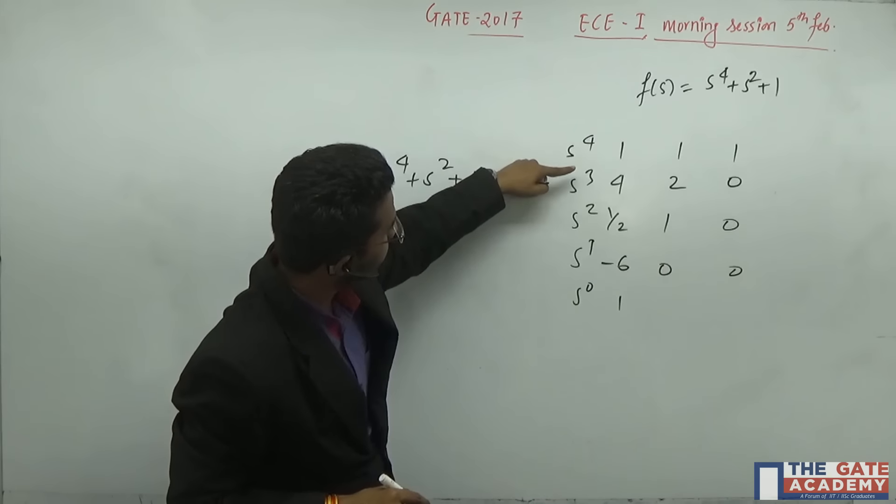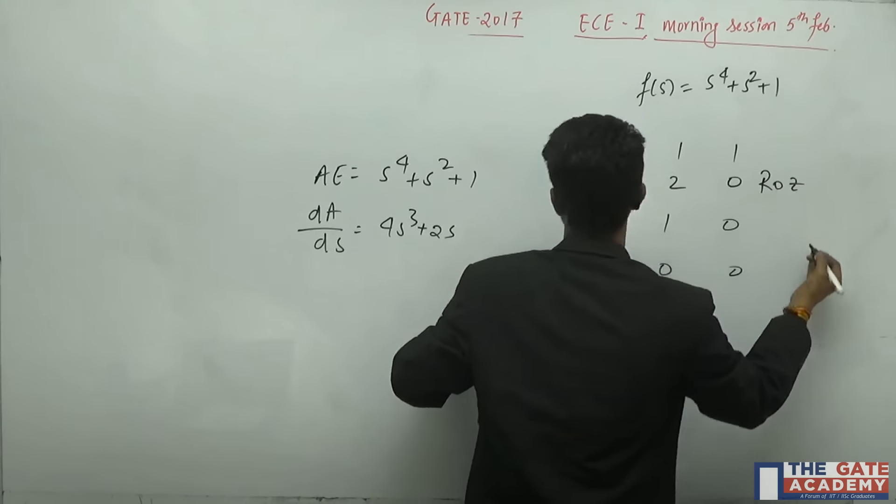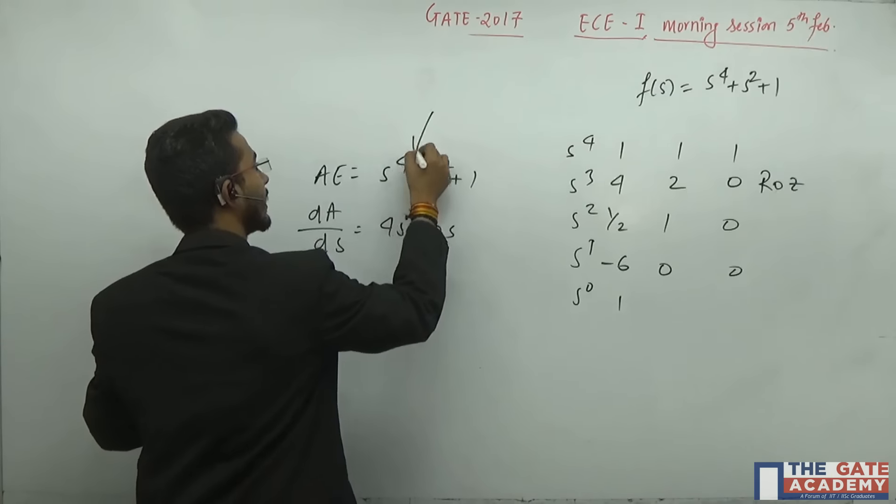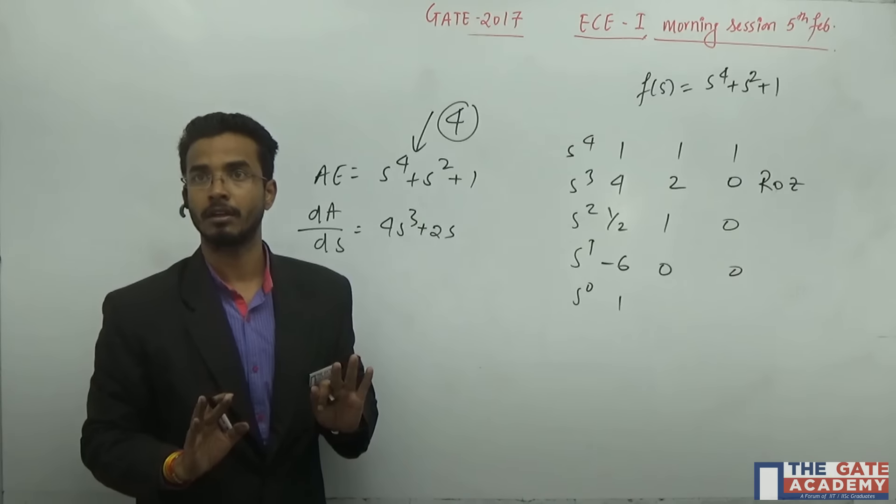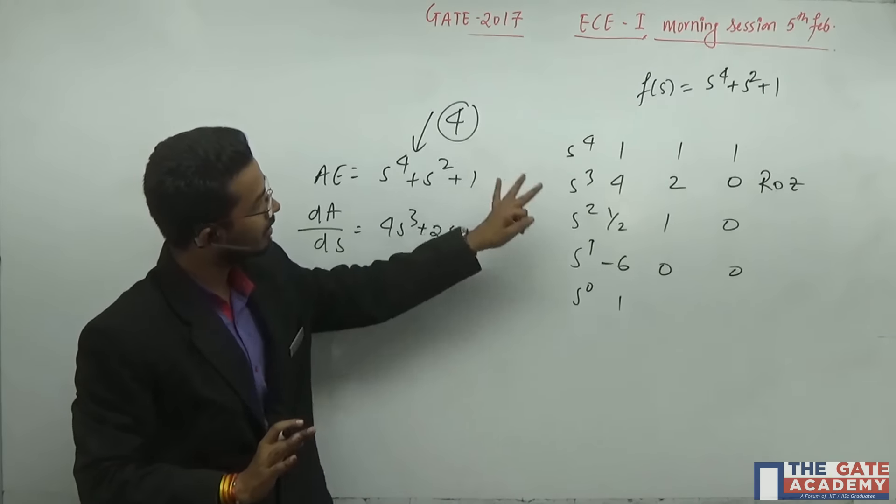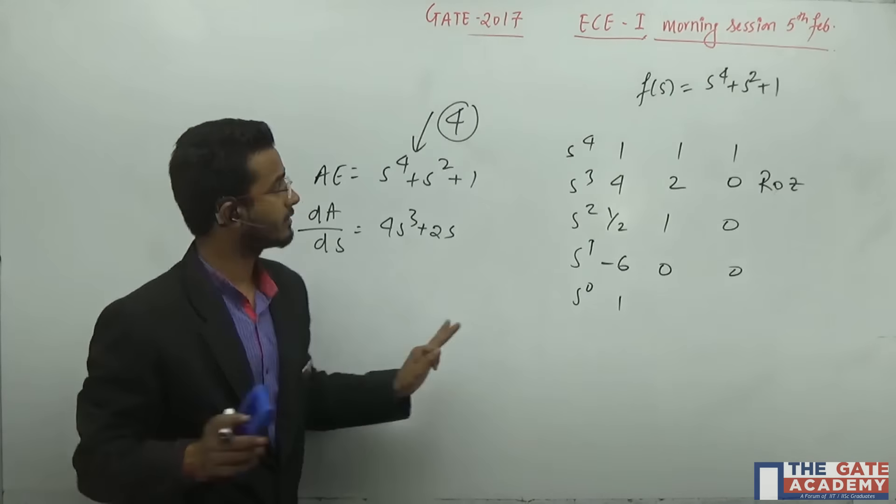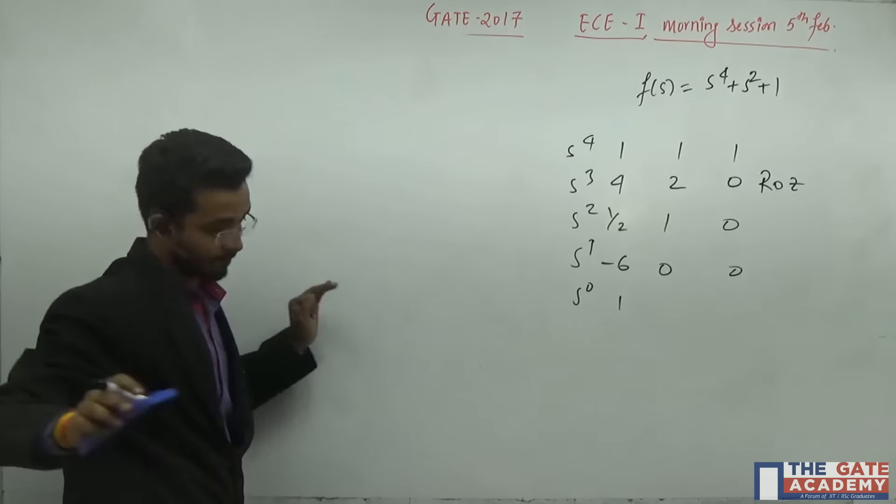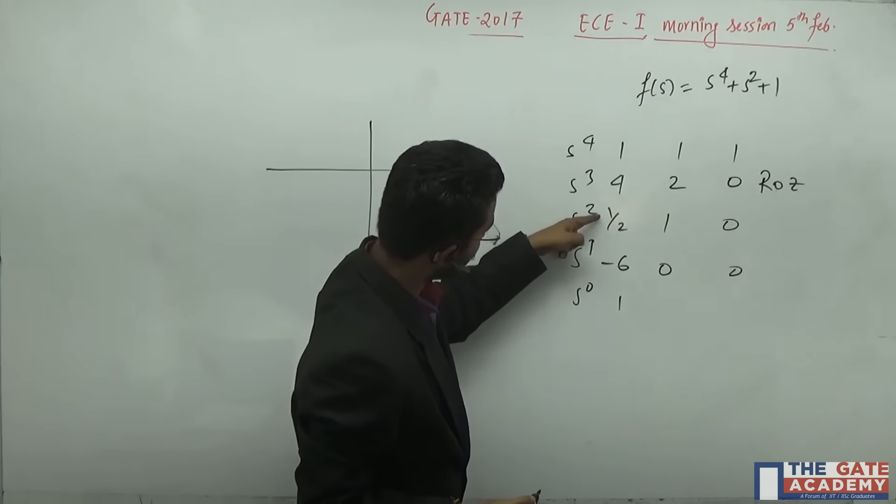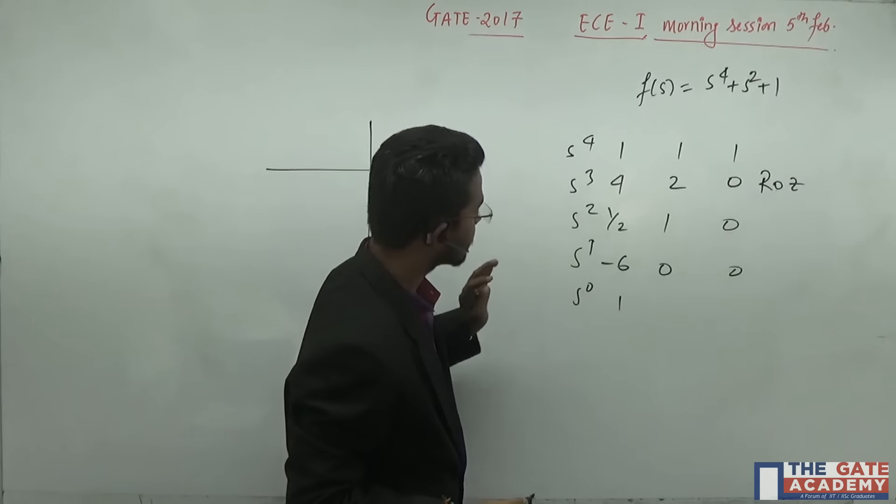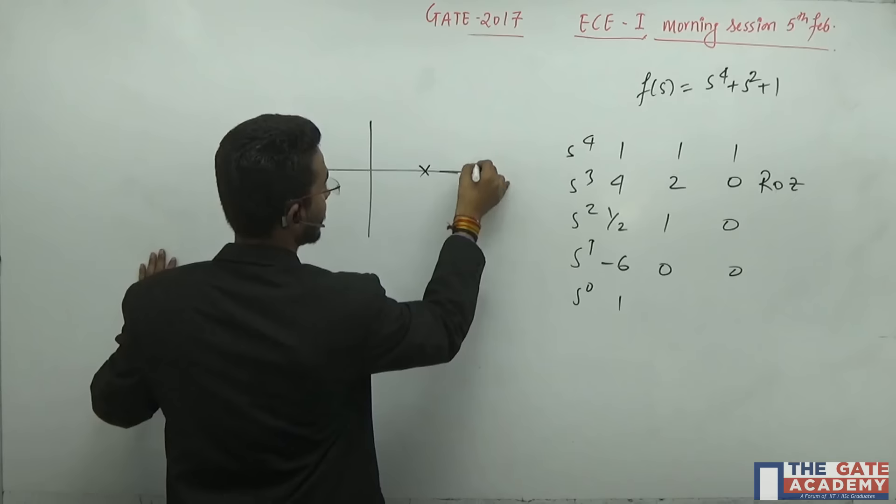The number of sign changes are, here we are getting row of 0s. And, the order of the auxiliary equation is 4. That means, the 4 roots will lie on the symmetry. The 4 roots will be symmetric on my s domain. Two sign changes are getting: one sign change is here and second sign change is here.